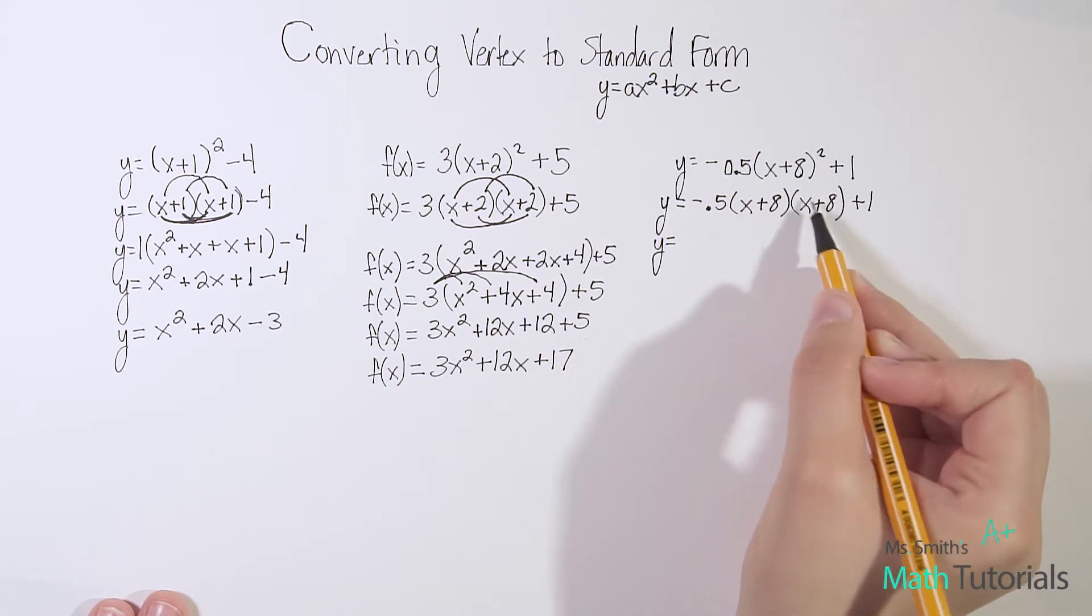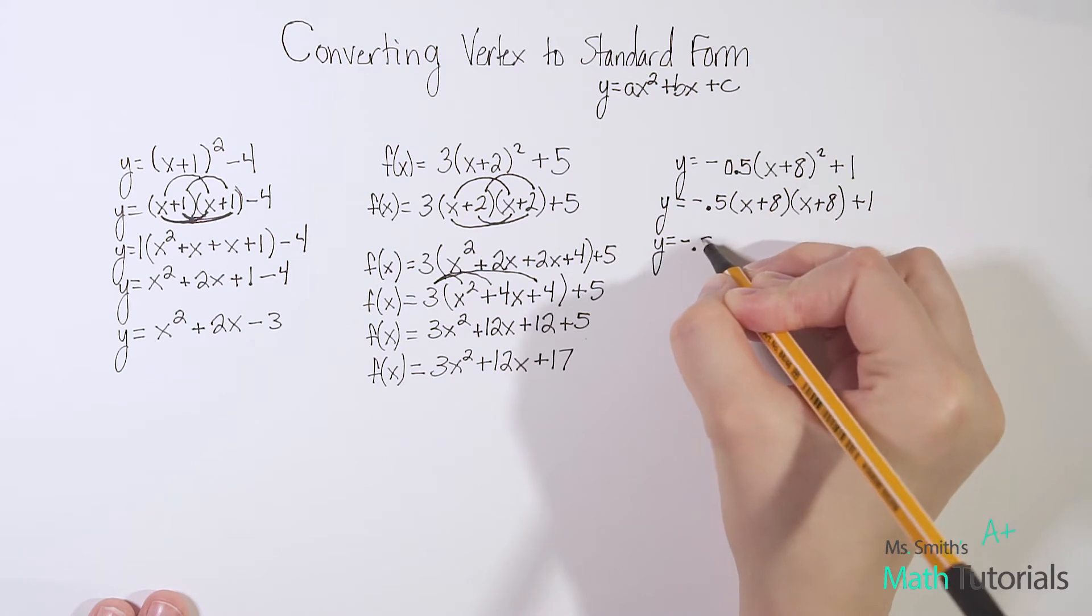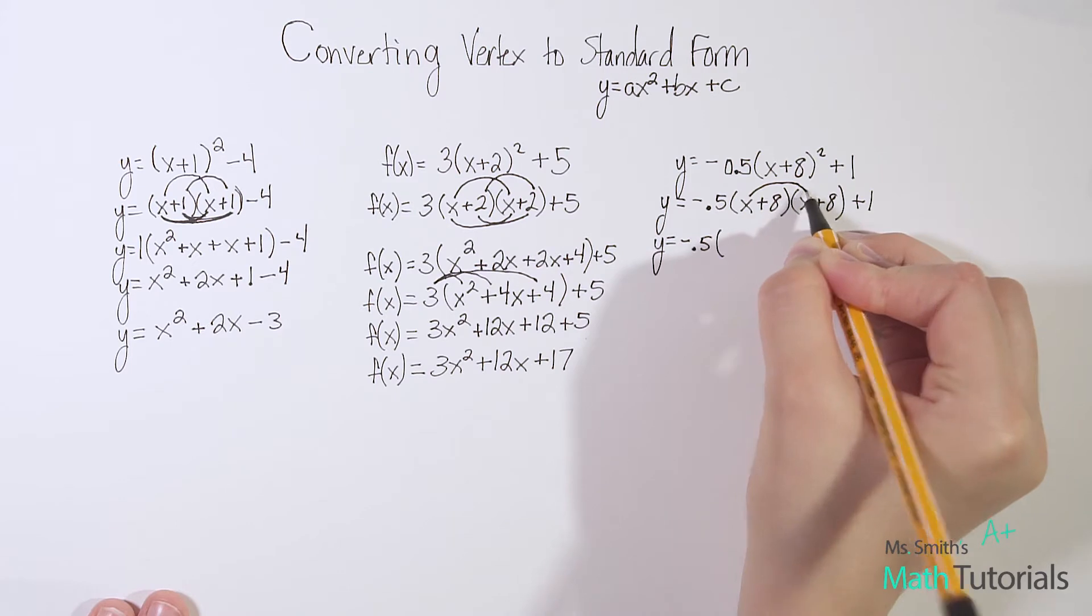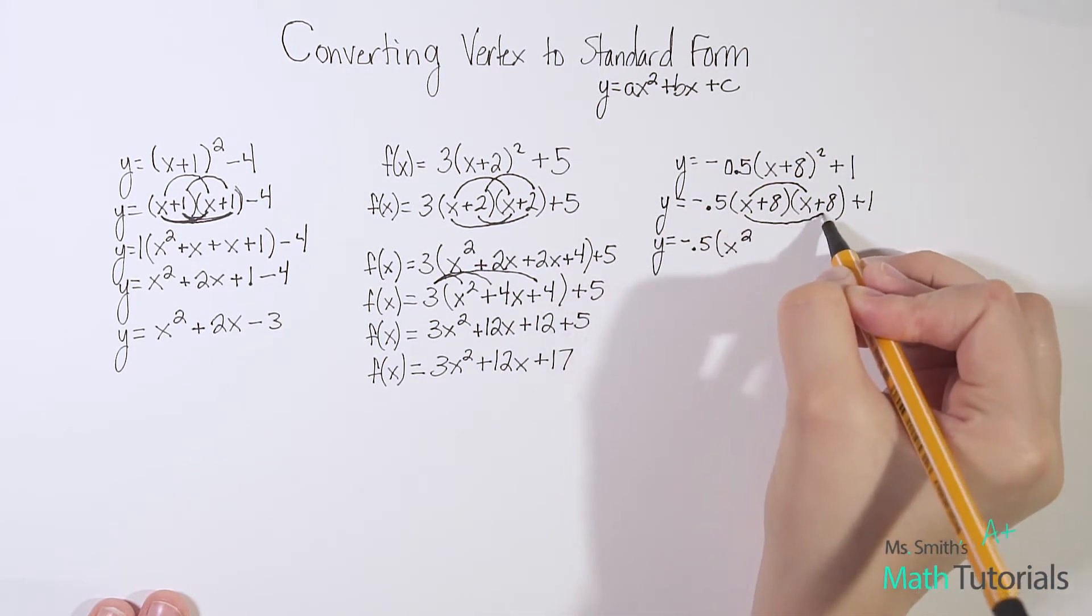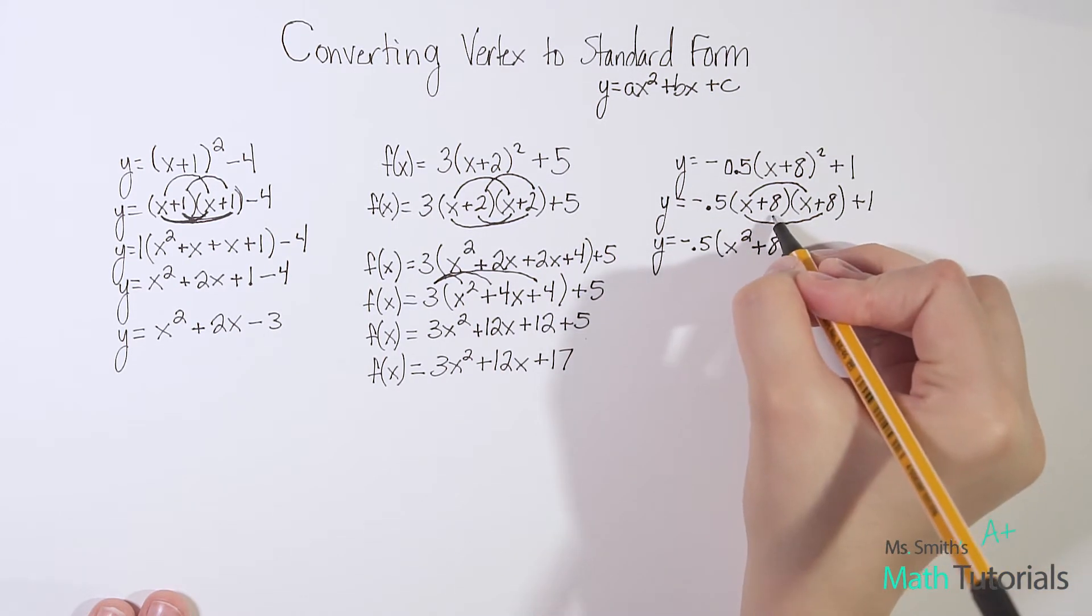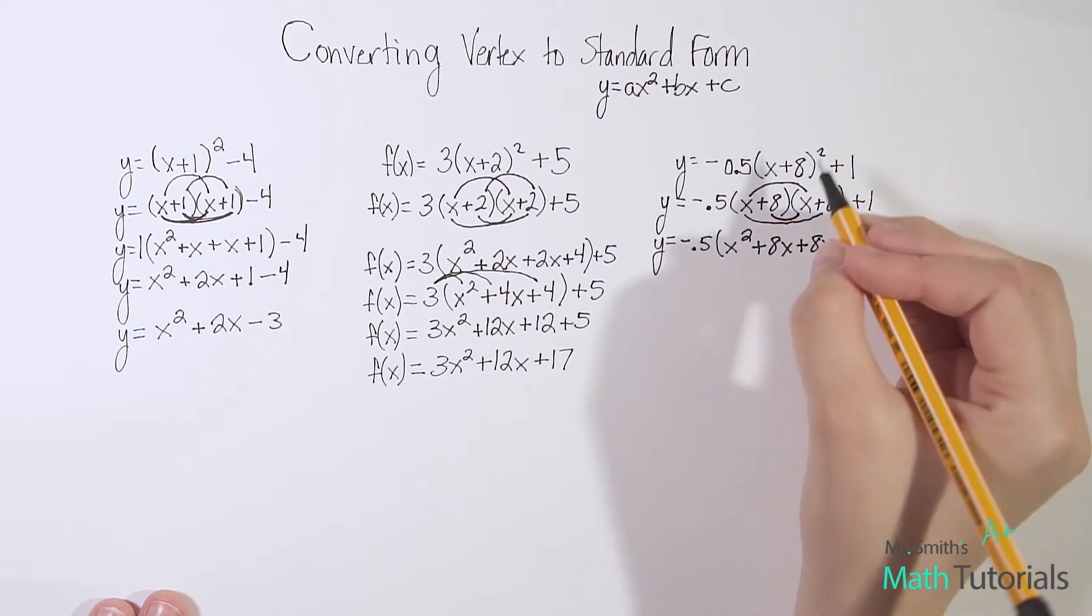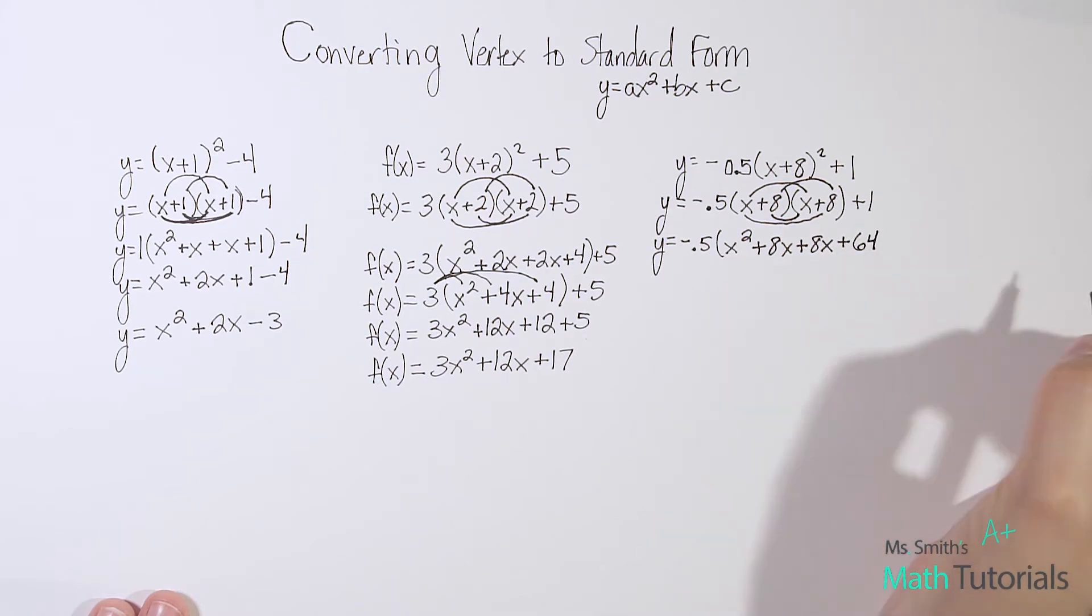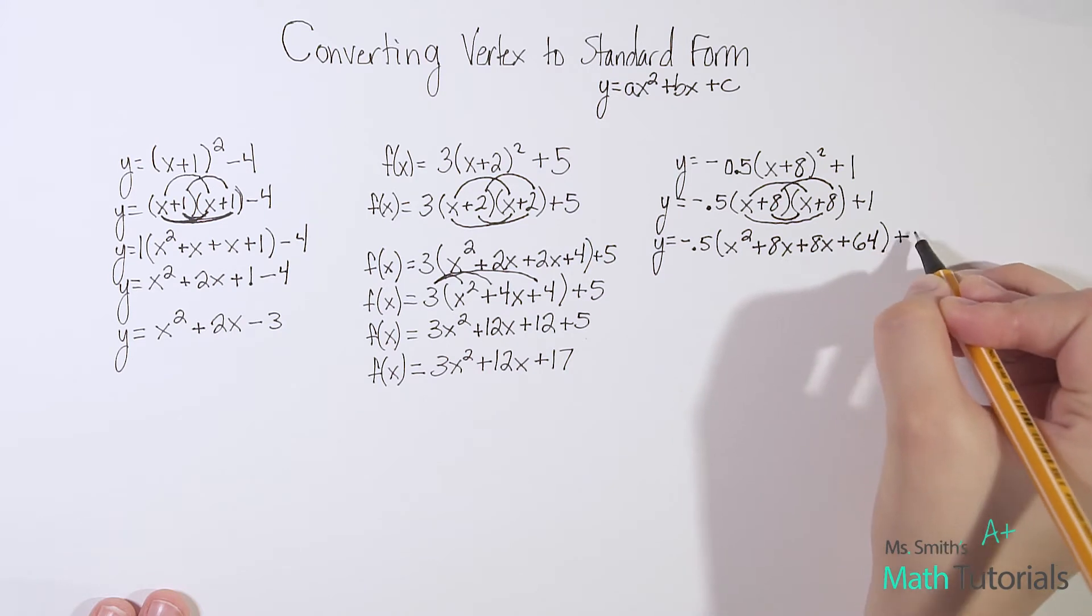y =, let's go ahead and foil this binomial times a binomial. We've got -0.5 times, x times x, that's our first, is x². x times 8 is +8x, that's our outer. Now our inner, x times 8 is +8x. And 8 times 8 is +64. And then we have our +1.